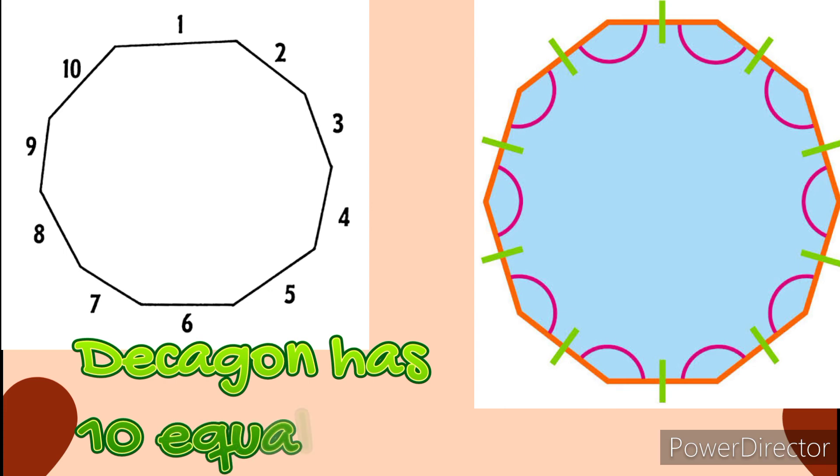Decagon. Decagon has ten equal sides. Let's do our counting again: one, two, three, four, five, six, seven, eight, nine, and ten. Decagon has ten equal sides.